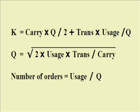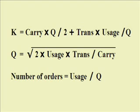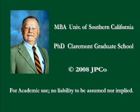To restate this: our total cost policy is the carrying cost times quantity divided by two, plus the ordering cost — that's cost per order times usage divided by quantity. The optimal solution is at the square root of two times the usage times the transaction cost divided by the carrying cost. The number of orders is usage divided by quantity, giving frequency per year. This is the Economic Order Quantity, originally developed by Baumol and Tobin, and is useful not only for individuals but for banks, grocery stores, and anyone who uses cash.